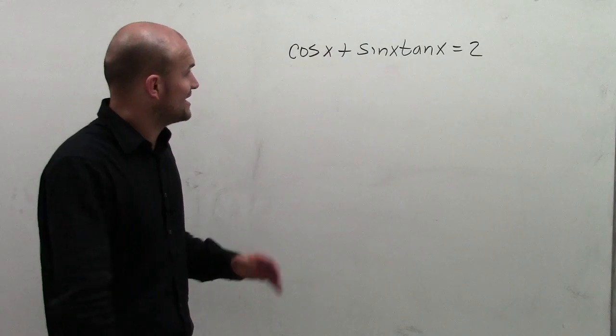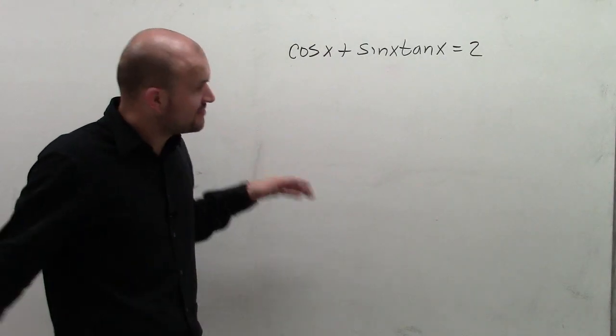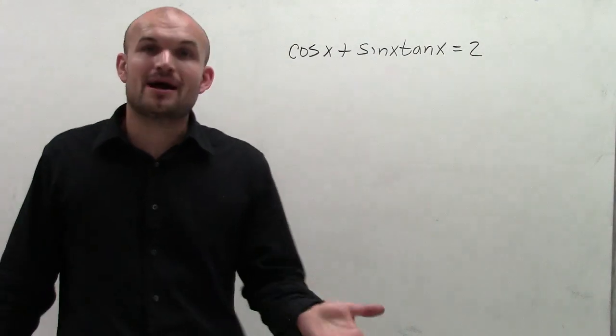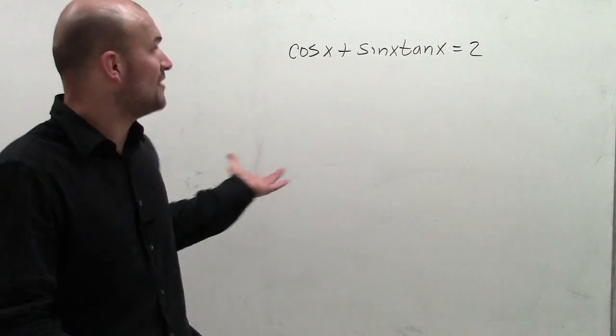OK, so for this problem, I have cosine of x plus sine of x times tangent of x equals 2. And for a problem like this, I'm looking at it, I'm saying, holy crap, I have three different functions,